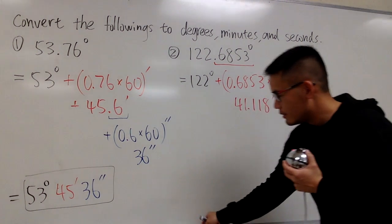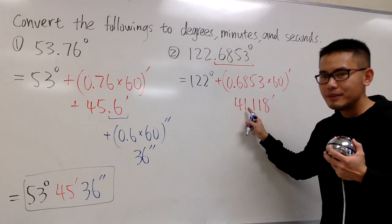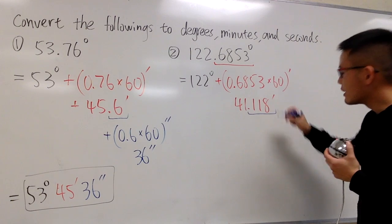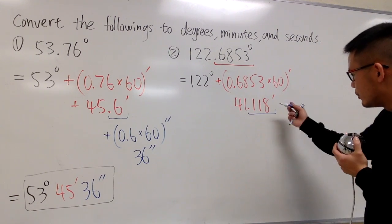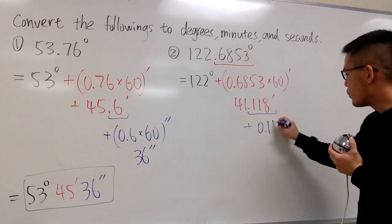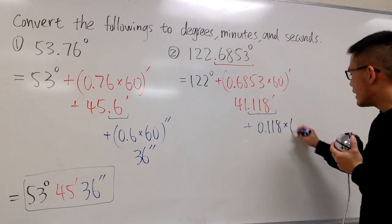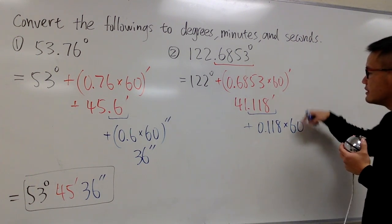And now, the 41, the whole number part right here, is the minutes. For the decimal part, we have to take this and change that into seconds. So to do that, we'll just add it with 0.118, and we multiply by 60, just like that.